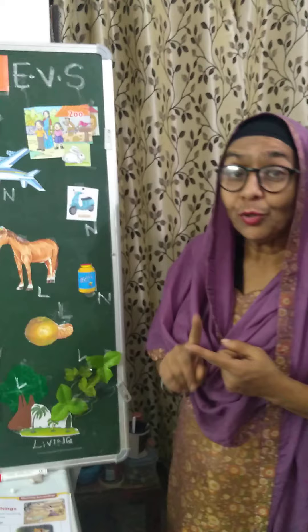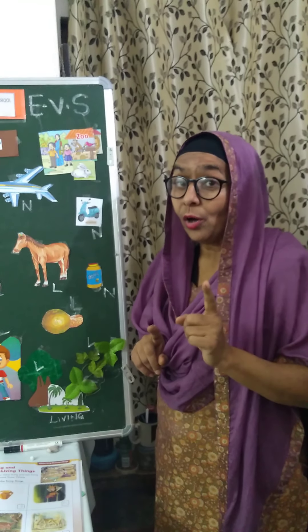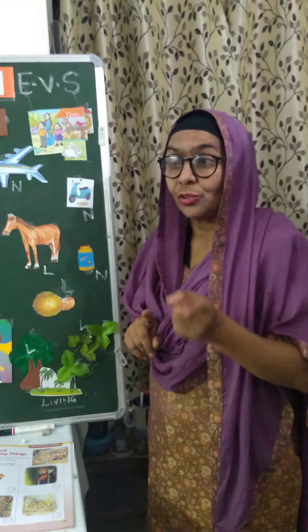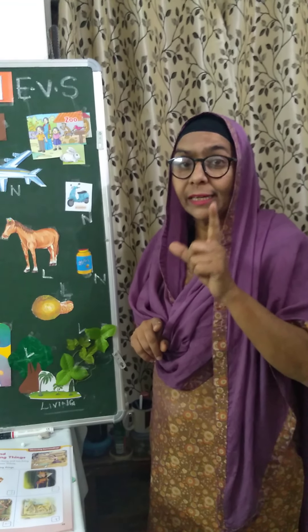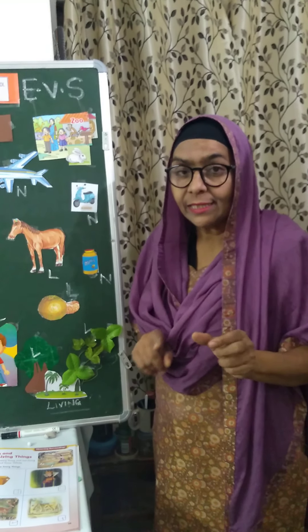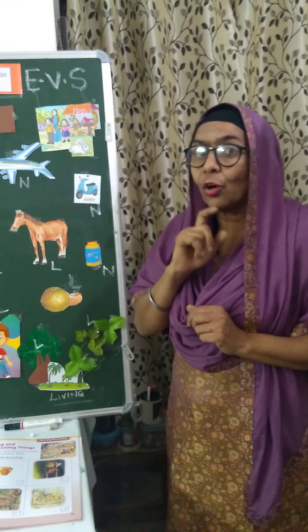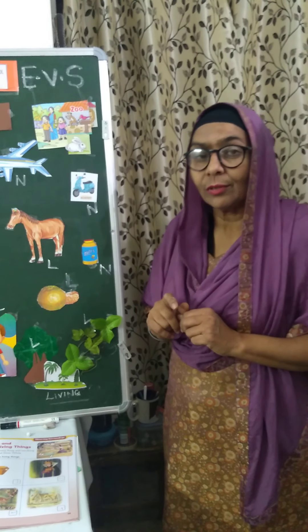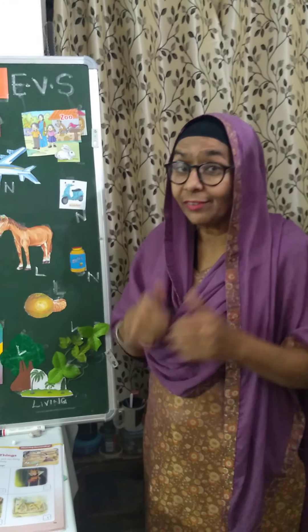This is a hut. Now our lesson is over. You will look for living and non-living things in your surroundings. Make a list of living things on one side, and a list of non-living things on the other side. Bye-bye children. Thank you. Have a nice day.